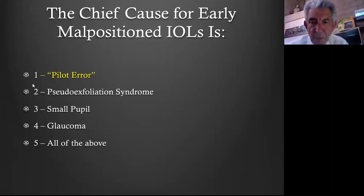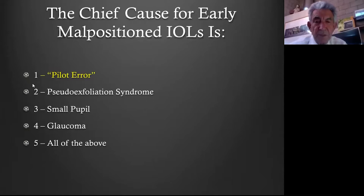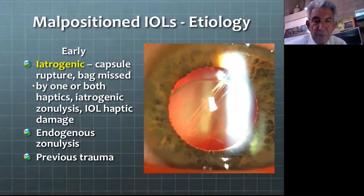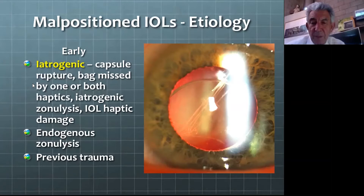Looking at what I consider the answer to be: we have a 50-50 split between pseudoexfoliation and pilot error. Actually, pseudoexfoliation syndrome is part of a combination of conditions with progressive zonulopathy, as we'll see when we consider late malpositioned IOLs. Pilot error early after surgery is the chief cause. Iatrogenic causes typically consist of capsule ruptures, missing the capsule bag with one or both haptics, damaging the zonule or the IOL. Endogenous zonulitis or previous trauma are secondary causes.